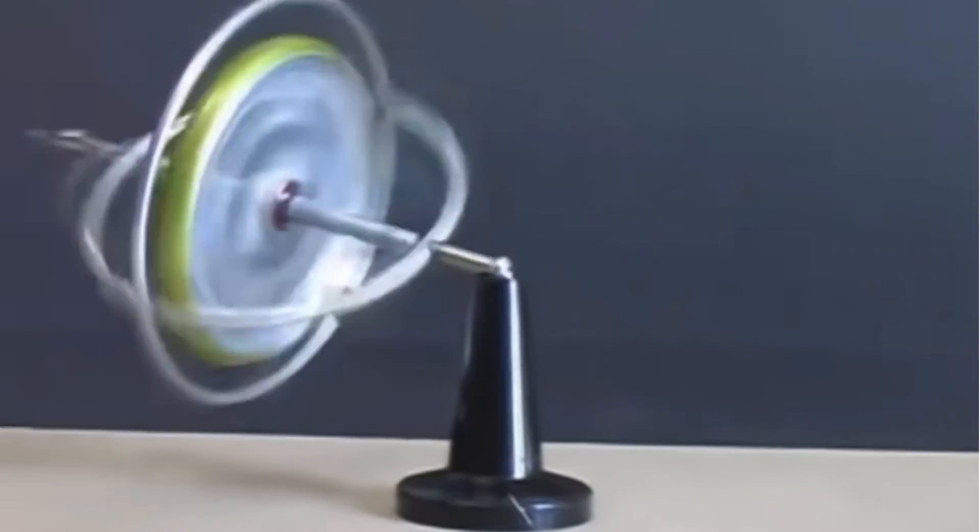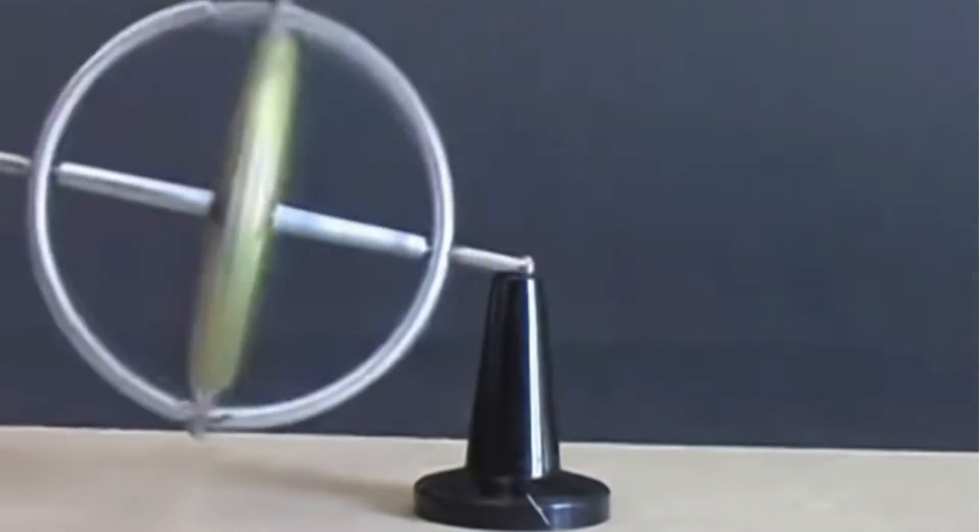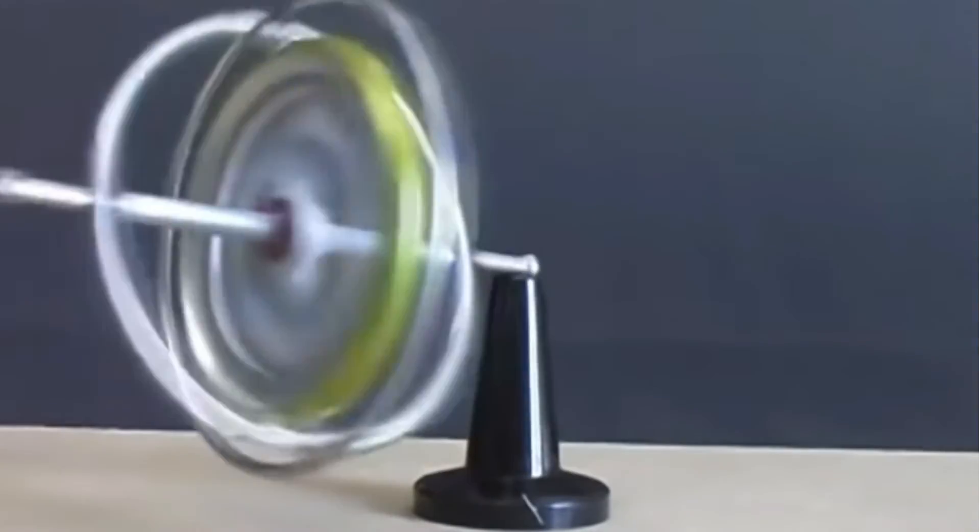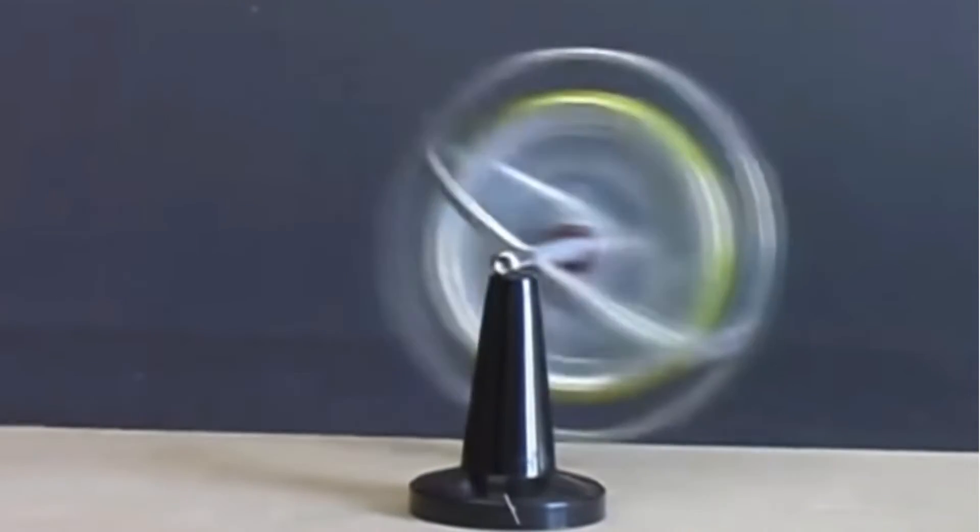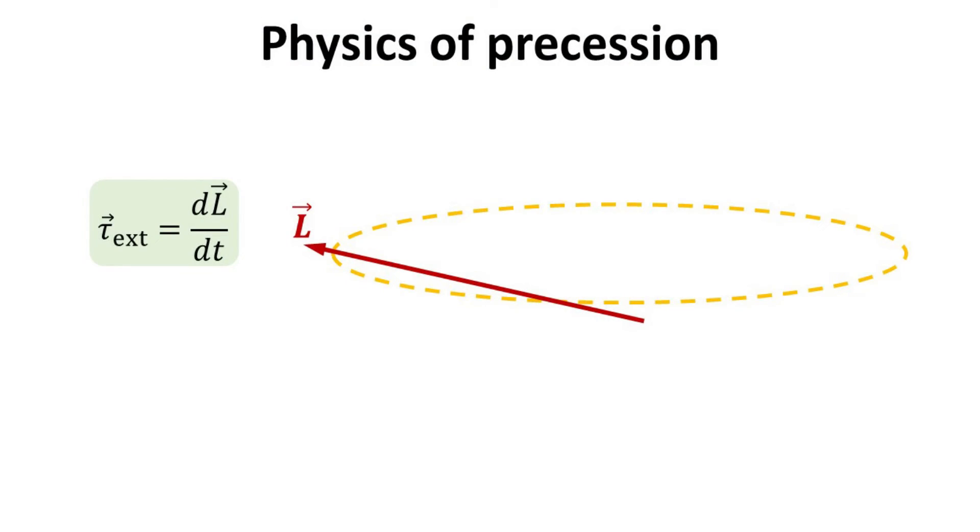Then you might ask, why wouldn't gravity cause it to topple? Now let's unravel the physics behind precession. The precession implies that the angular momentum vector L is changing with time, and from what we learned, there must be an external torque driving this change in momentum. What is it?